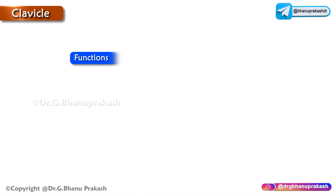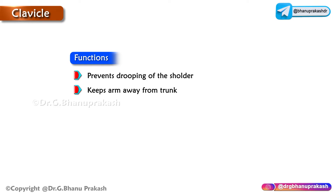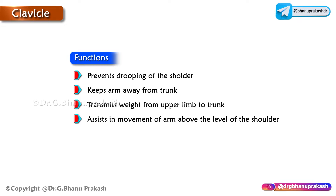The clavicle has the following functions: it prevents drooping of the shoulder, keeps the arm away from the trunk which allows it to swing freely without coming in contact with the trunk, transmits weight from the upper limb to the trunk, and assists in movement of the arm above the level of the shoulder.